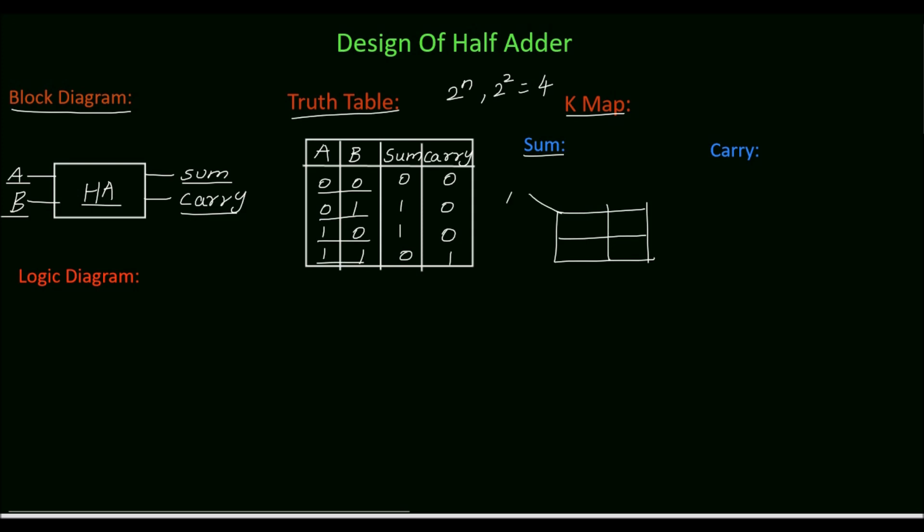Inputs are A and B. For A the input can be either 0 or 1. For B the input can be either 0 or 1.